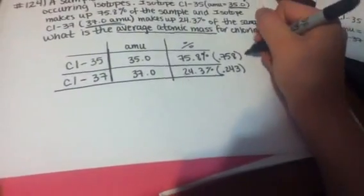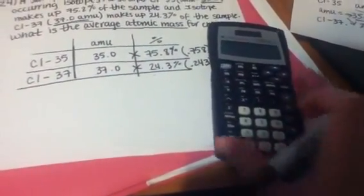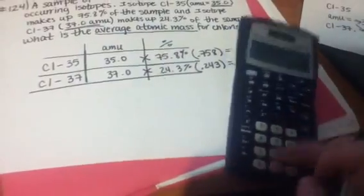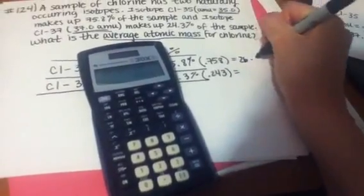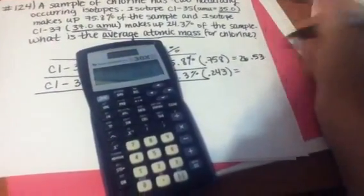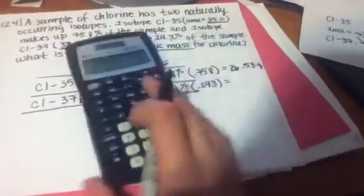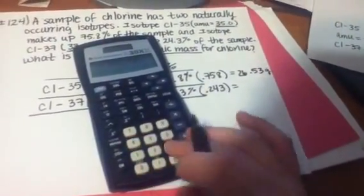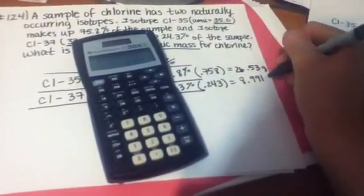And now what I do is I multiply across. And so this is going to equal, multiply these two and these two. 35.0 times 0.758 equals 26.53 grams. And 37 times 0.243 equals 8.991 grams.